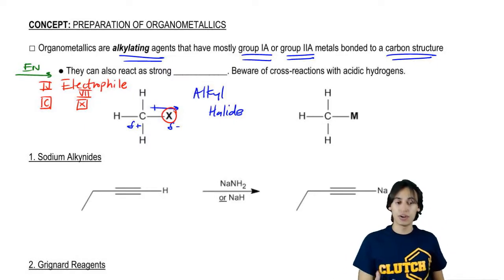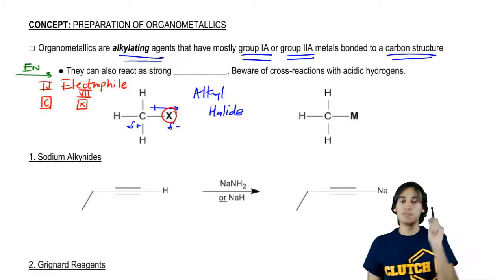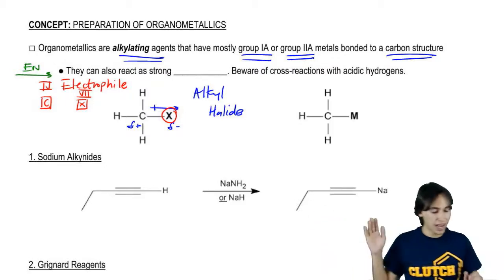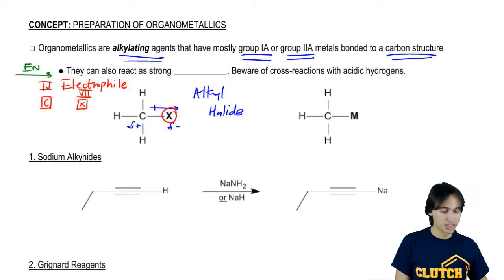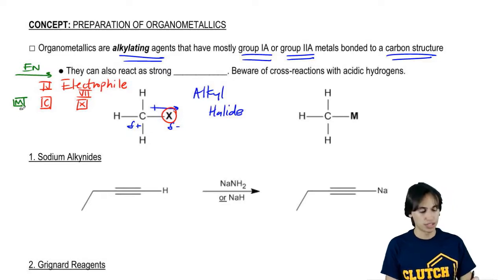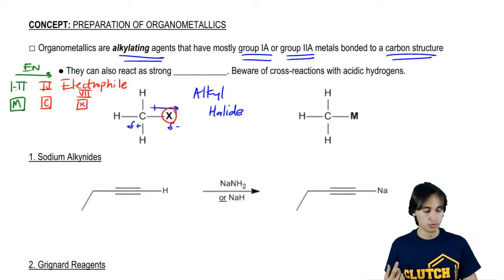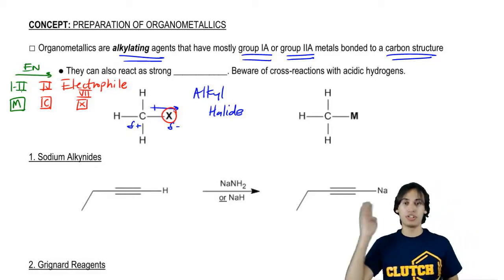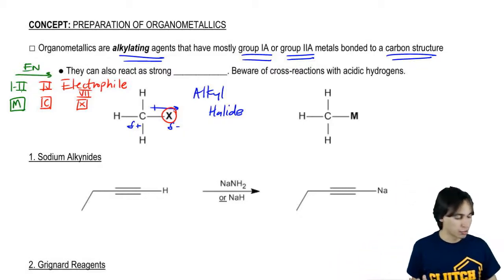But now let's think about these organometals that we're using for organometallics. Well, I told you that these metals are usually in group one or in group two. So that means are they going to be on the right side or the left side of carbon? They're going to be on the left side. So actually, my metals – I'm just going to use the letter M to stand for them in general. These are going to be in group one or in group two. So which one is actually going to be more electronegative, the carbon or the metal? And the answer is the carbon will.